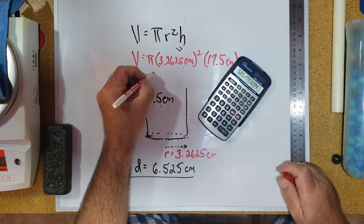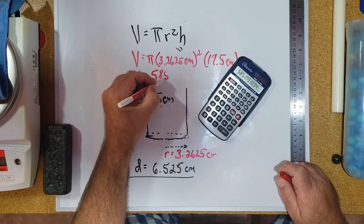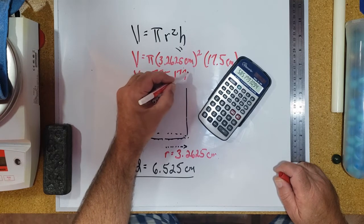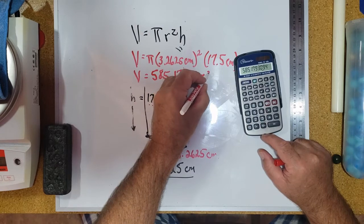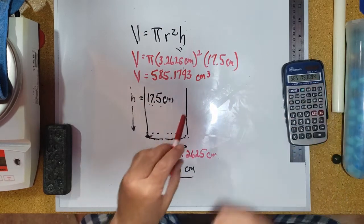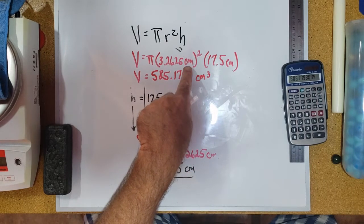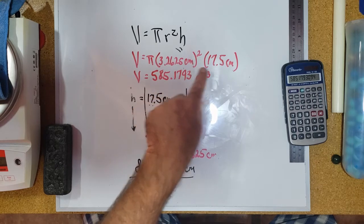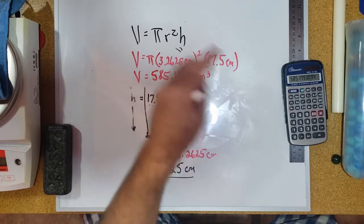Now this says 585.1793 and so on, and this is going to have units of centimeters cubed. Now this is an important aspect of this problem. Notice up here the radius was given in centimeters, but that's squared, and then centimeters again. So that's centimeters times centimeters times centimeters three times, hence the centimeters cubed.